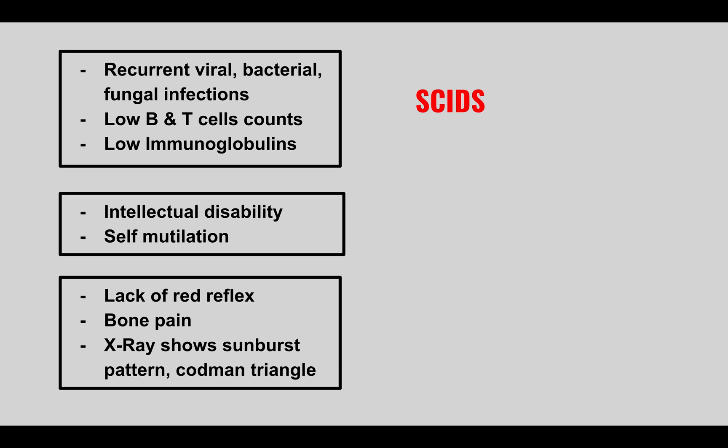The next condition: a patient comes in with intellectual disability and self-mutilation, such as biting off fingers and hands. This is Lesch-Nyhan syndrome — an HGPRT deficiency. Since it's X-linked recessive, it presents in little boys. They also get a buildup of uric acid and can present with gout-like symptoms.